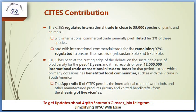CITES regulates international trade in close to 35,000 species of plants and animals, with international commercial trade generally prohibited for 3% of these species and regulated for the remaining 97% to ensure trade is legal, sustainable, and traceable. The 3% that are prohibited are the most endangered species, while the 97% can be traded legally under regulation. Trade must be traceable — untraceable trade makes illegal trading far easier.